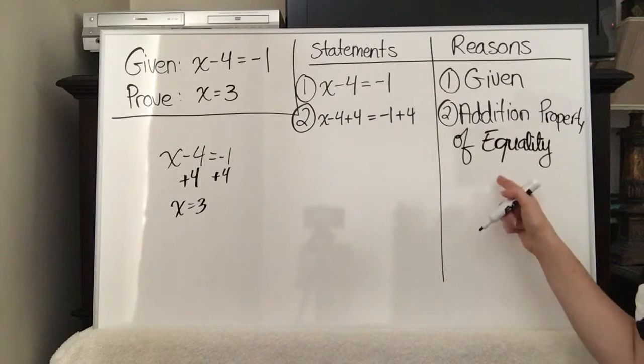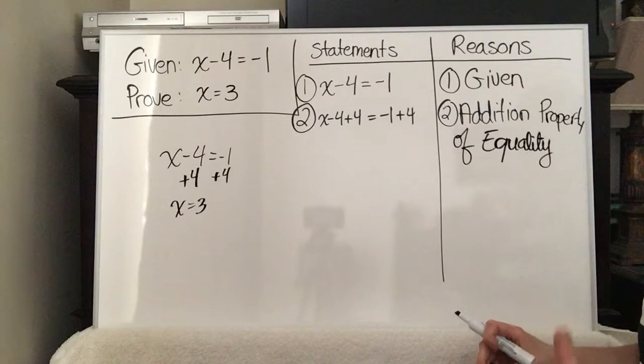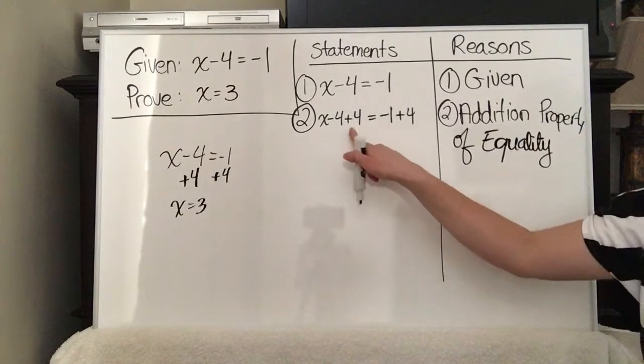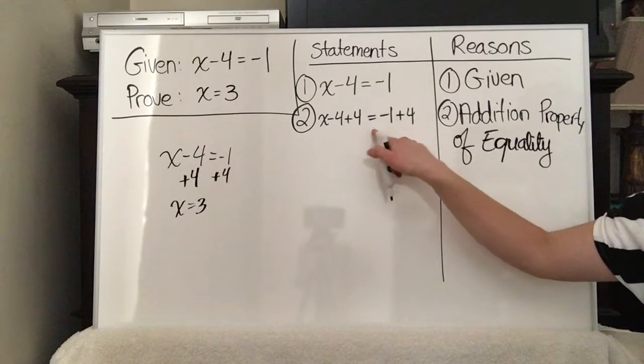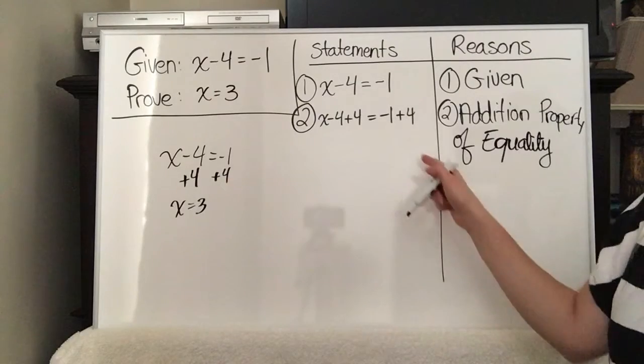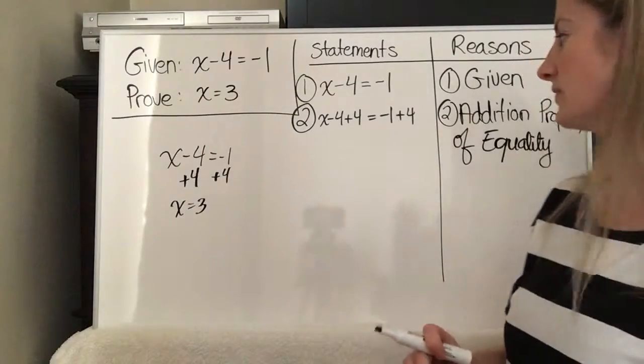So the addition property of equality basically says that we are allowed to add the same number to both sides of the equation, and it will keep the equality. So if you add 4 to this side, you have to add it to this side to keep the equality. So adding the same number to both sides keeps the equality. That's what we did. We added 4 to both sides.